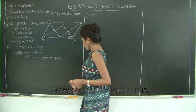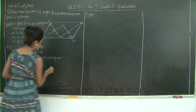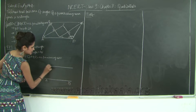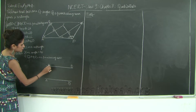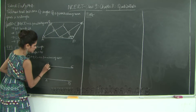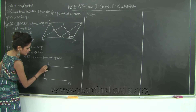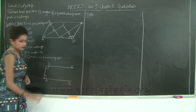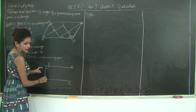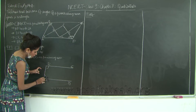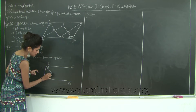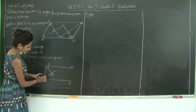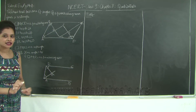First, notice your parallel lines AB and CD with AD as the transversal. Therefore angle CDA plus angle BAD is equal to 180 degrees, because they are a pair of interior angles on the same side of the transversal. But we have bisectors here meeting at point Q. That means half of angle A plus half of angle D is going to be half of 180 degrees, which is 90 degrees.